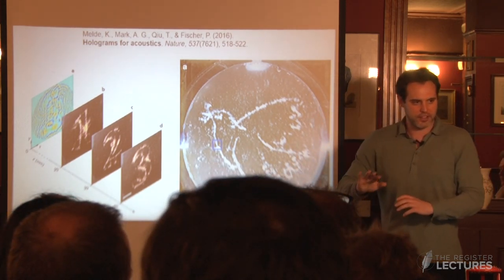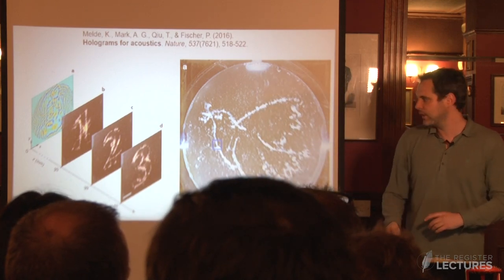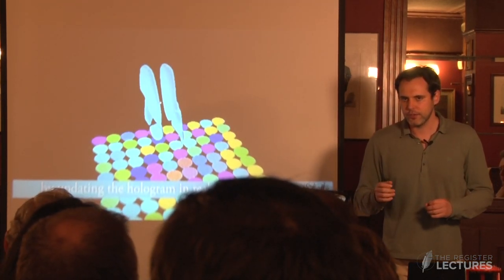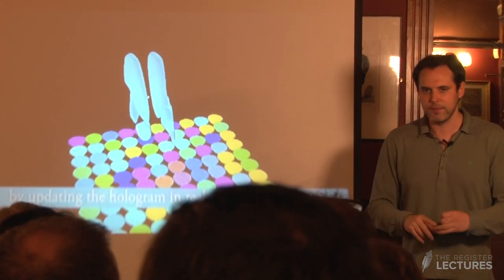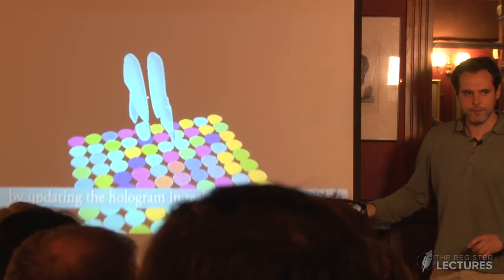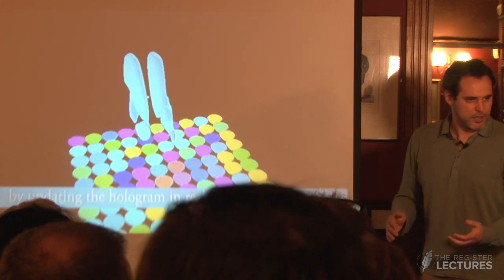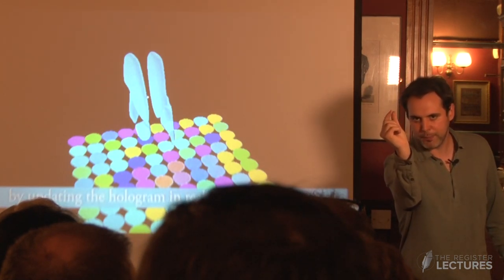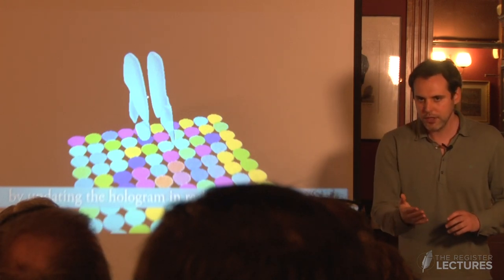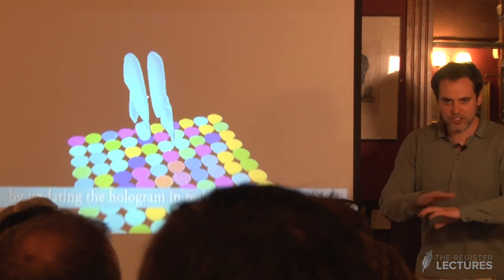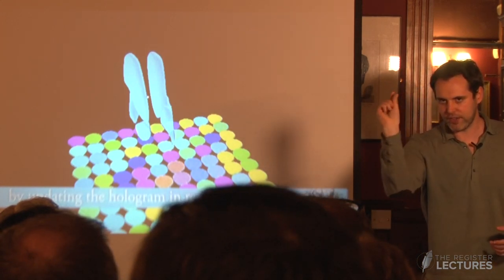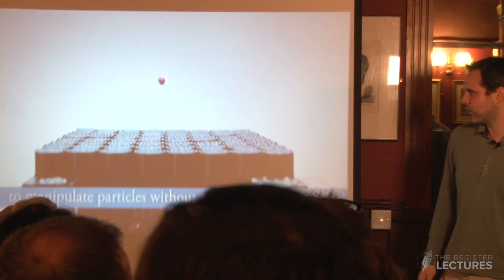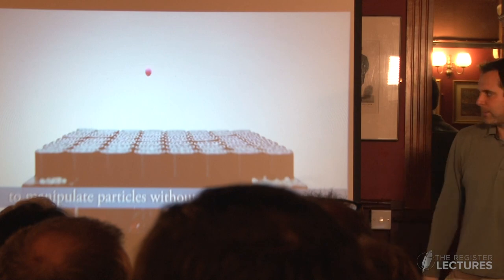All these tiny circles are speakers emitting at the same amplitude and frequency — they just change their phase, represented by color. If we could see sound, the acoustic field would look like a pair of fingers holding a particle. You cannot see the sound, but sound can push particles. Just by changing the phase, we can move these holographic fingers around and rotate them, and the particles get trapped there and moved.